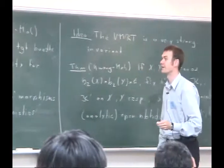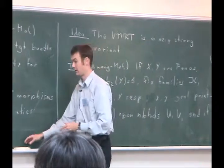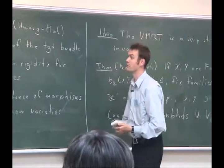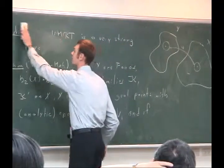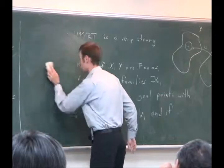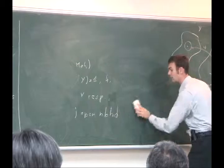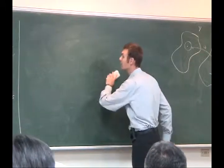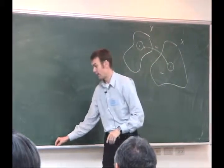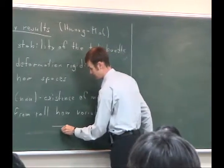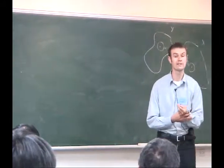Obviously I can't explain all these results, so I restrict to one case, which I will do tomorrow: the uniqueness of contact structures, which also has to do with the variety of minimal rational tangents. For today, this is what I wanted to say about it, and I would like to set off in a different direction and discuss a question I mentioned yesterday already.